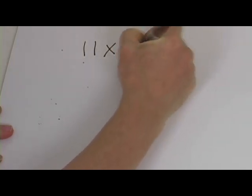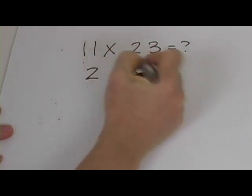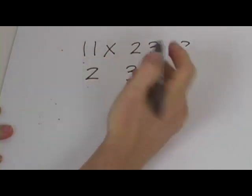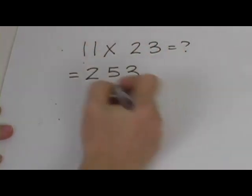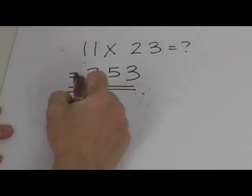Just to review, 11 times 23, do you remember what that is? You take the 2 and the 3 and you separate them. And what's 2 plus 3? It's 5. The answer is 253. Do you remember how to do it with a 3 digit number?